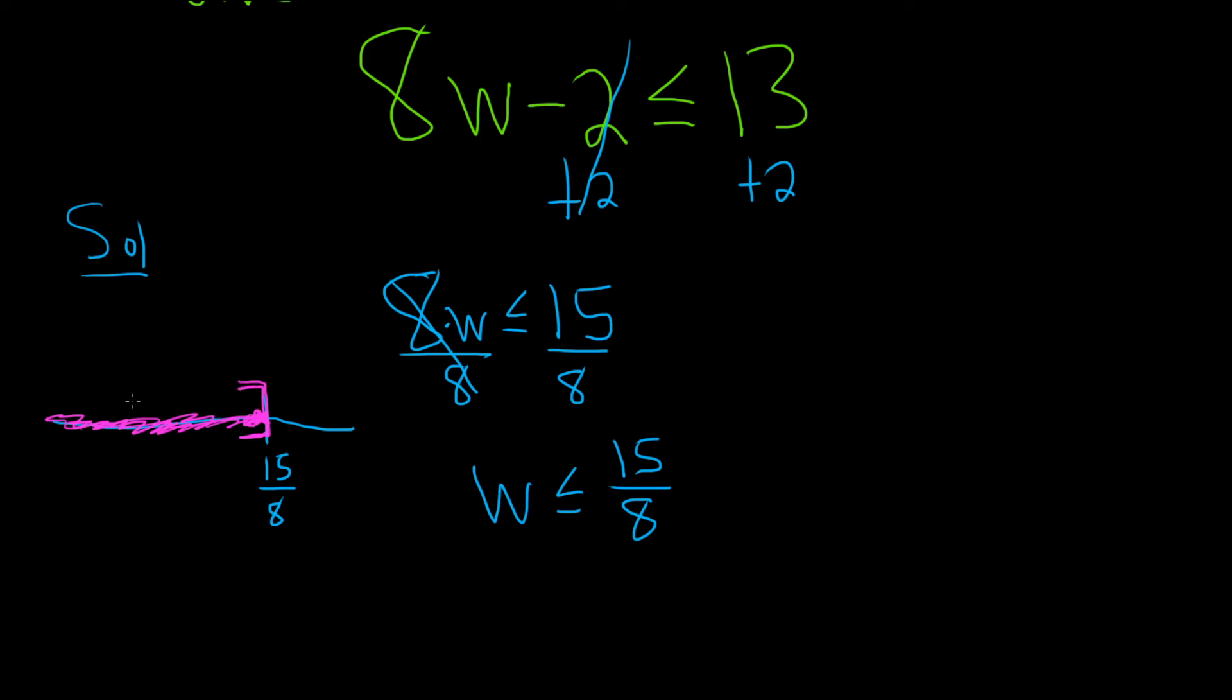And to get the answer in interval notation, you can get it straight from the graph. So this goes on forever to the left. So it will be negative infinity all the way to 15 over 8. And you do include the 15 over 8 because you have the equal to piece here. And so again, you do use a bracket.